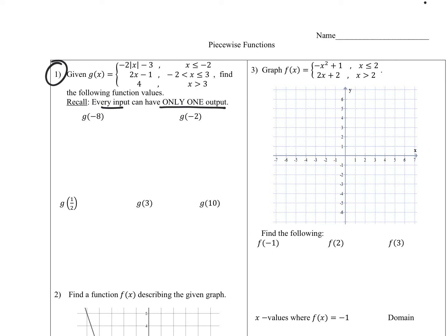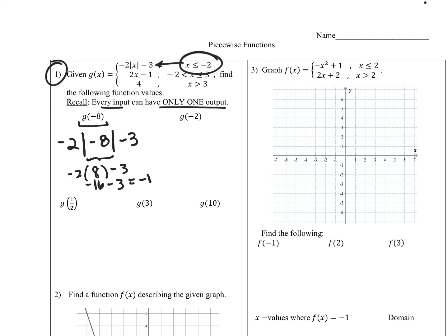We want to find out which piece we're going to plug into. We have g of negative eight. The x-value of negative eight falls right inside that domain where x is less than or equal to negative two, which tells us we're going to plug into that piece. So we'll have negative two times the absolute value of negative eight minus three. That gives us negative two times eight minus three, which is negative 16 minus three, so we get negative 19.